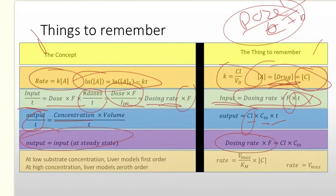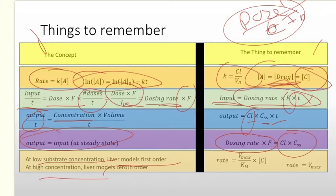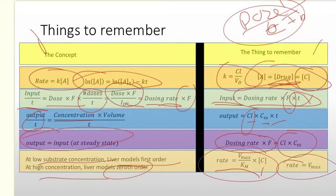At steady state, the dosing rate times the bioavailable fraction equals the clearance times the concentration at steady state. Additionally, at low substrate concentrations the liver models first-order metabolism, and at high substrate concentrations it models zero-order metabolism. So the rate equals Vmax over Km times C when C is low, or rate equals Vmax when C is high.